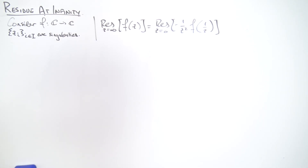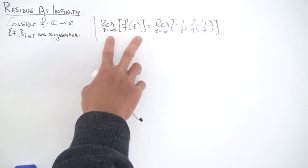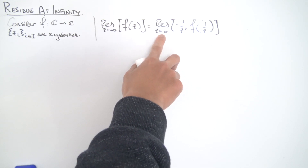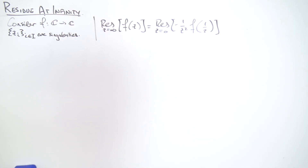Greetings everybody. Today we're going to be taking a look at a very interesting concept in complex analysis called the residue at infinity. This is a very useful tool to evaluate certain types of contour integrals, especially when you have a lot of singularities enclosed inside your contour, or in some cases when you have branch cuts enclosed inside your contour. In this video I want to show that the residue at infinity of f(z) can be redefined in terms of the residue at zero with a couple of modifications to our function.